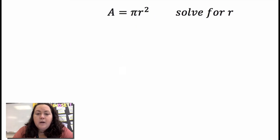A equals pi r squared, solve for r. So I want to get r by itself. I'm going to divide both sides by pi. That cancels out there. I get a over pi equals r squared.